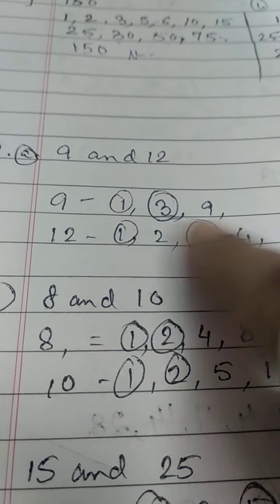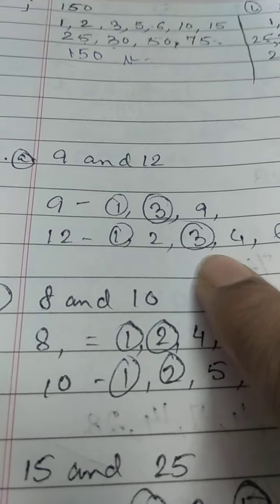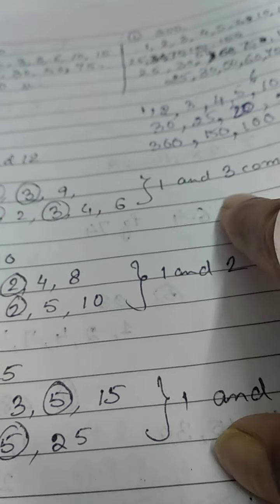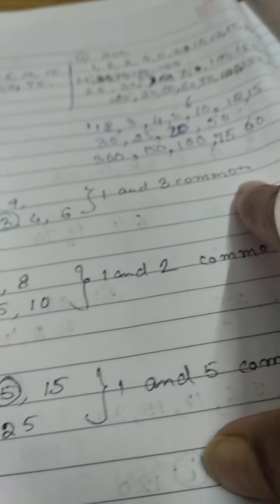Let's see. For 9: 1, 3, 9. For 12: 1, 2, 3, 4, and 6. But the common is 1 and 3. So we will write 1 and 3 as common factors.